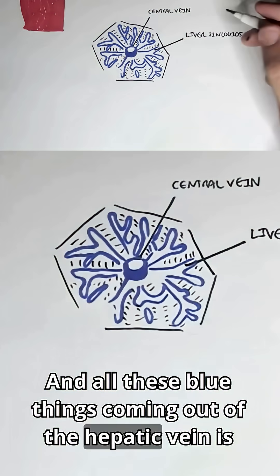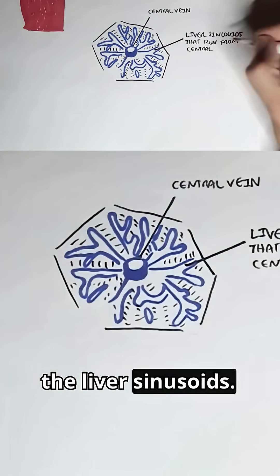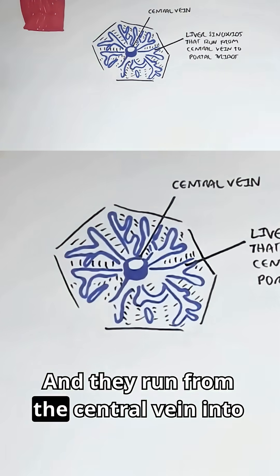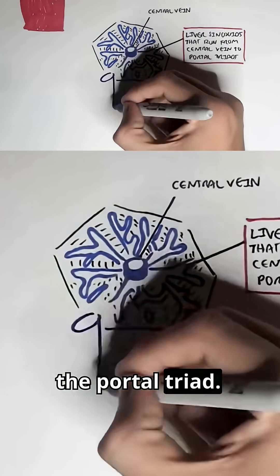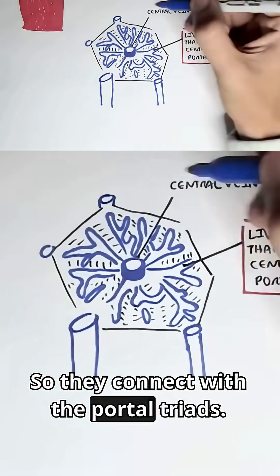And all these blue things coming out of the hepatic vein is the liver sinusoid. And they run from the central vein into the portal triad, so they connect with the portal triads.